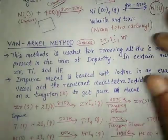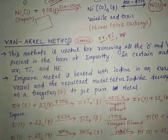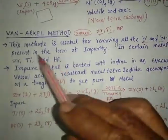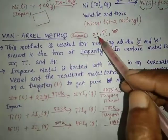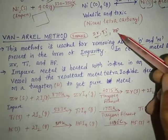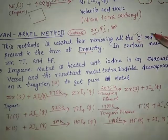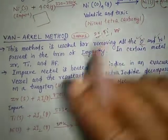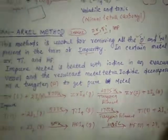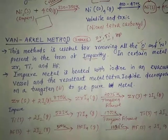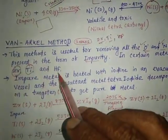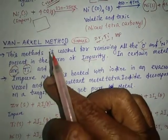This method is useful for removing all the oxygen and nitrogen present in the form of impurity. If titanium is a crude metal, the oxygen and nitrogen present can be removed by this method. In certain metals like zirconium, titanium, and hafnium, this method is applied.